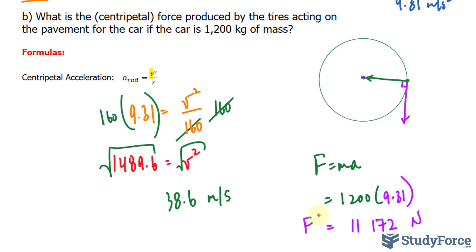Now just before we conclude, keep in mind that the velocity we found in part a of 38.6, any speed greater than that means that the car would not maintain that circular motion and would slide out.